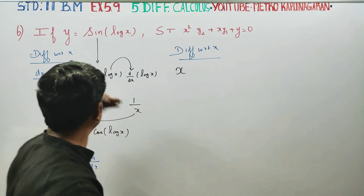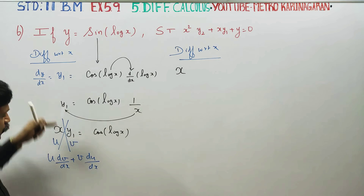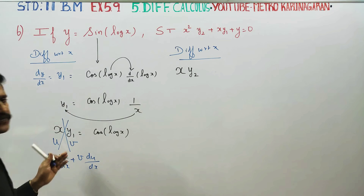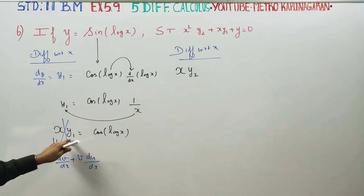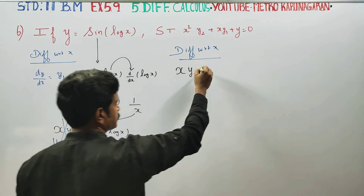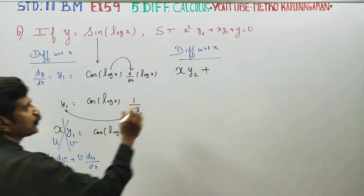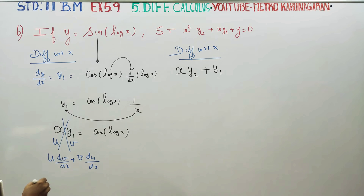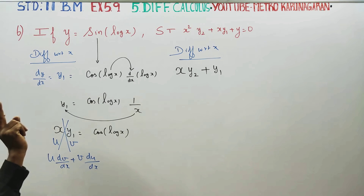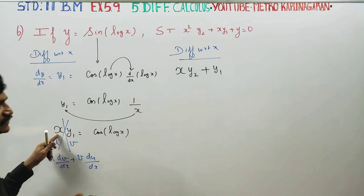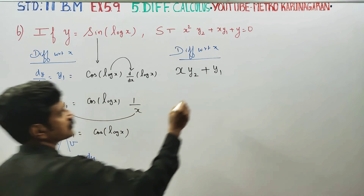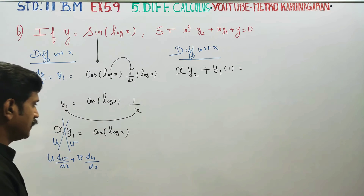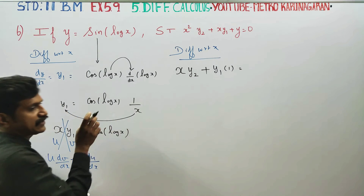y1 will differentiate to y2. If y1 is differentiated, we get y2. x differentiated gives 1. Applying the product rule to xy1, x differentiates to 1.